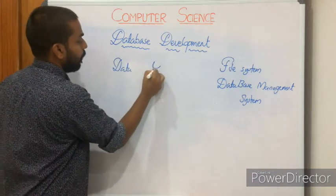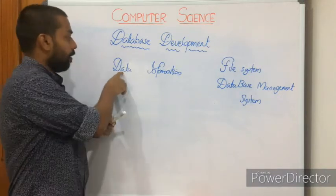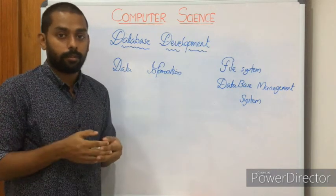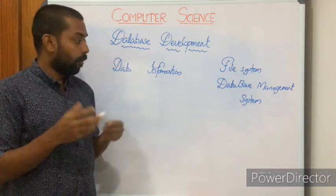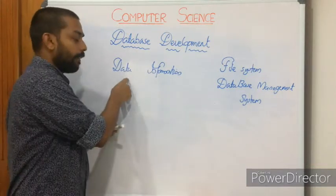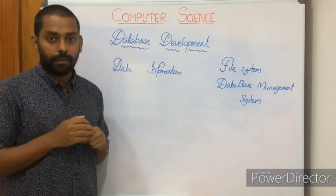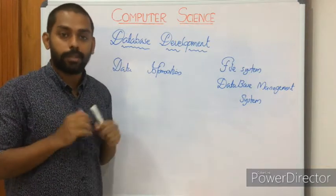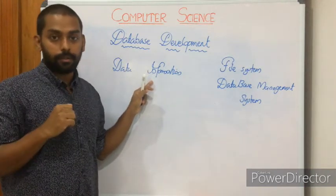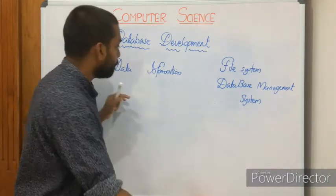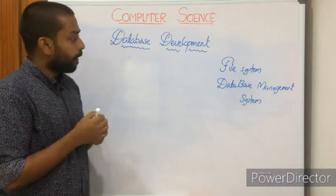Before proceeding, we need to look at two terminologies: data and information. Data consists of raw facts and figures — raw means unorganized. Information contains organized facts and figures, or we can say processed data is called information. Data can be termed as input given to the machine, and information can be termed as output. However, in the concept of database, we consider data and information somewhat the same.